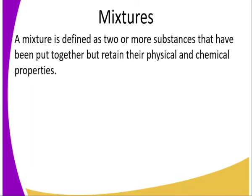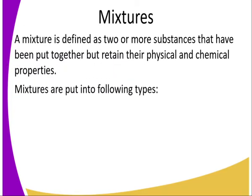Now, the first type of classification of substances is mixture. A mixture is defined as two or more substances that have been put together but they retain their physical and chemical properties. Since they retain their physical and chemical properties, they can be separated using physical means.